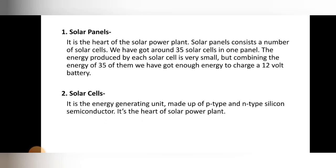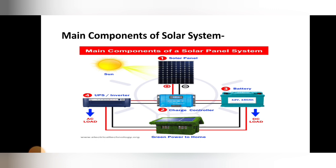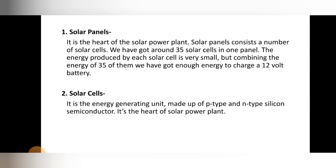Let's see the details of the solar system components. The first important component is the solar panel. Solar panel is the heart of the solar power plant — it is the component which extracts energy from sunlight and converts it into electrical energy. If it is absent or not working, then the batteries, inverters, and all other parts are not useful. The solar panel extracts photon energy from sunlight and converts it into electrical energy.